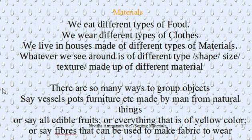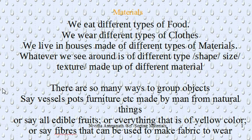Whatever we see around us is of different type, shape, size, texture, or material. For example, a car is made of steel, a football is made of leather, a basketball or volleyball is made of rubber, swimming pool floats are made of plastic filled with air, the road is made of tar or cement, and the chair we sit on is made of plastic or wood. Even the wood used for a blackboard is different from the wood used for tables, chairs, doors, and windows.